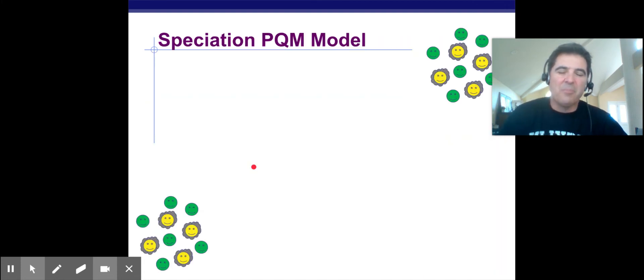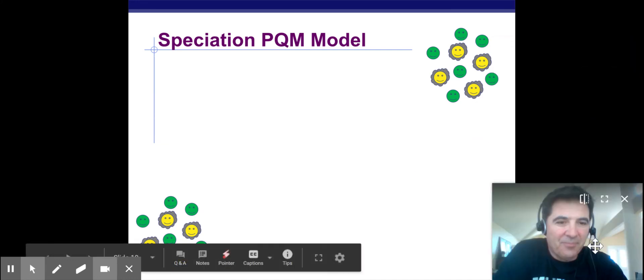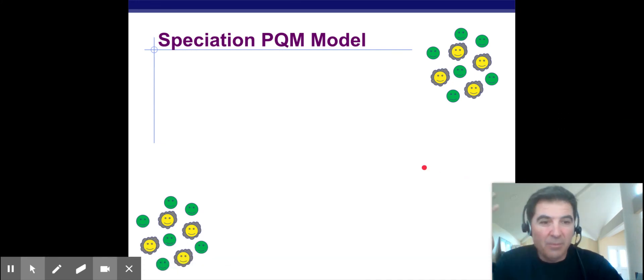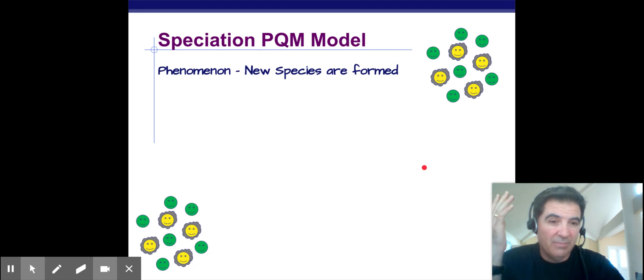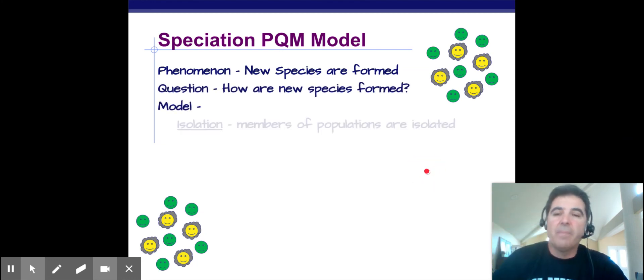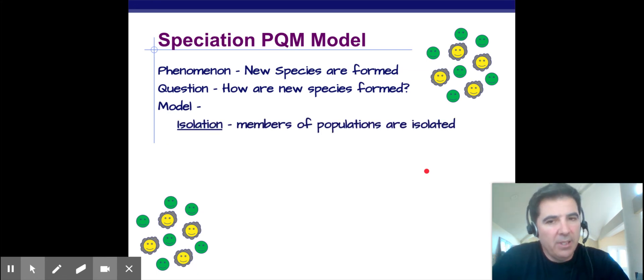So those are the forms of isolation, geographic and reproductive. Okay, the last thing is our model, or our PQM model. So what we have here, going back to our little guys, so phenomenon: new species are formed. So the question is, how the heck do we get new species? Question: how are new species formed? And then the model, the model says that the members are isolated, which means either geographically or reproductively isolated, separated from one another so they can no longer mate.